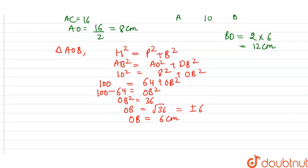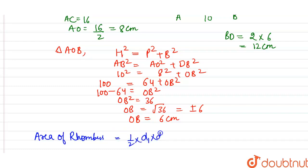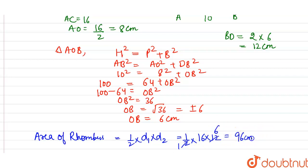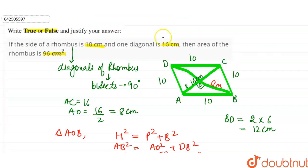Now we have both diagonals: 16 centimeters and 12 centimeters. The formula for the area of a rhombus is: Area = ½ × diagonal 1 × diagonal 2 = ½ × 16 × 12 = 96 centimeters square.